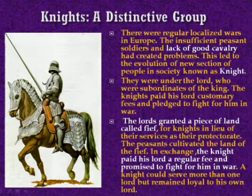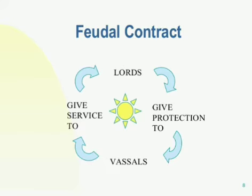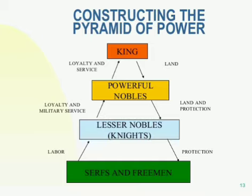A knight could serve more than one lord but remained loyal to his own lord. Now we can clearly understand how land, which originally belonged to the king, passed on to different classes as he was unable to protect it all. The king passed it to the nobles through a bond of vassalage; the nobles passed it to the knights through vassalage; and the knights passed it to the peasants similarly. Every time land passed from one class to another, the size of the land decreased. This is the base structure of the feudal society — the distribution and division of land in lieu of services needed.